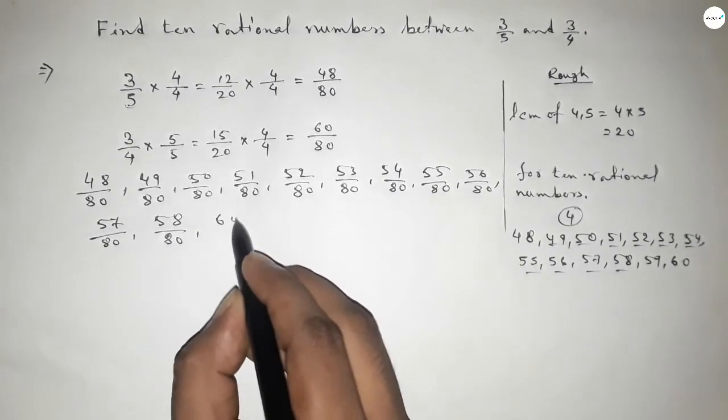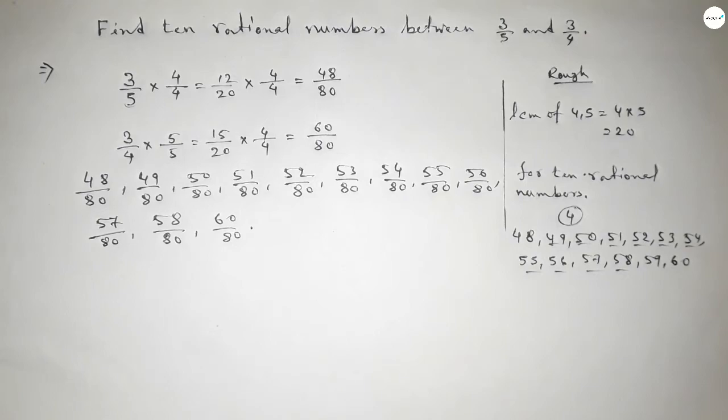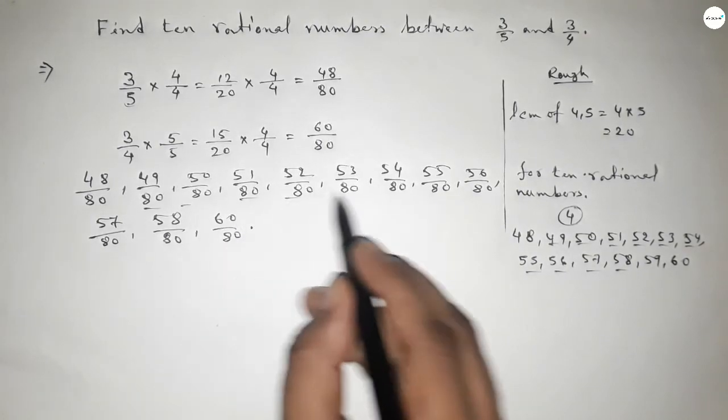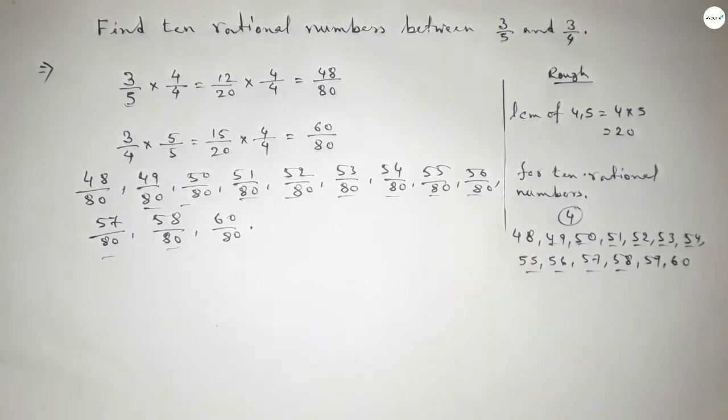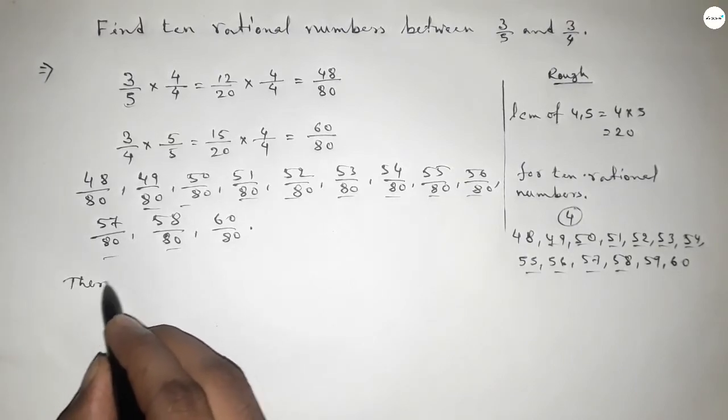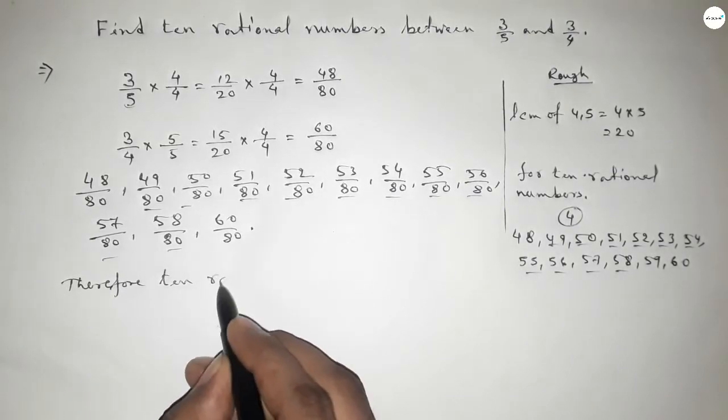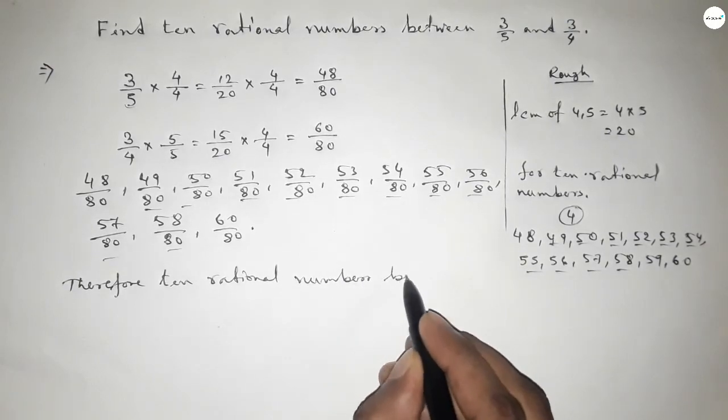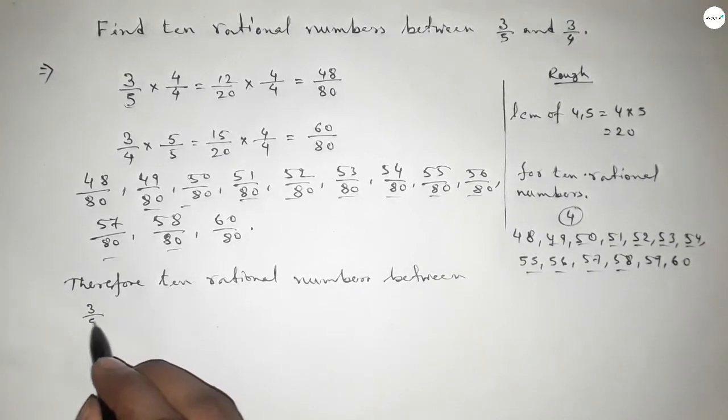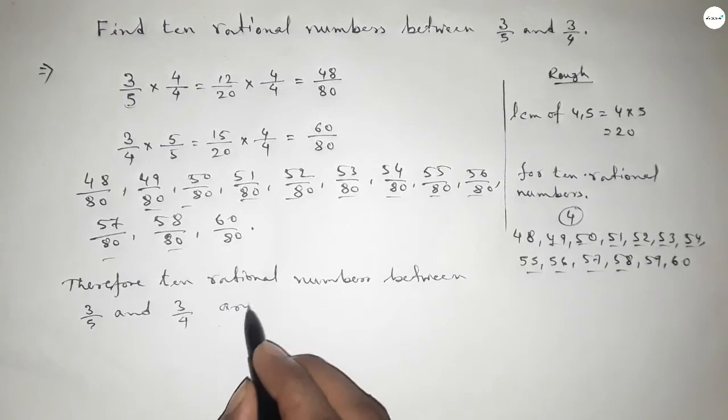And these are the 10 rational numbers between 3 over 5 and 3 over 4. Therefore, 10 rational numbers between 3 over 5 and 3 over 4 are these numbers.